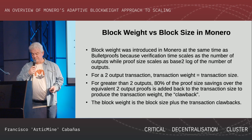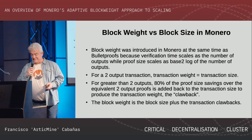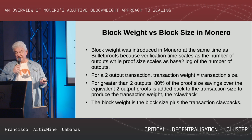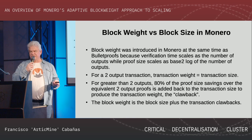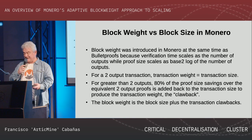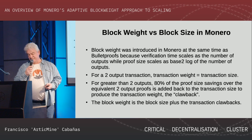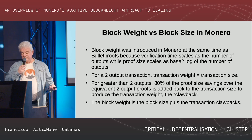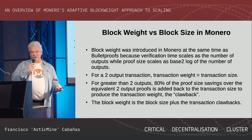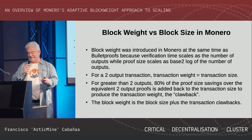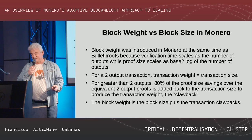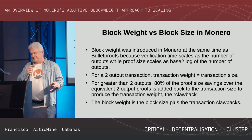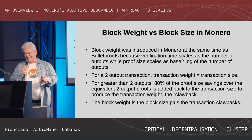Block weight versus block size: in Monero, block weight was introduced at the same time as bulletproofs. The main reason is that verification time scales linearly while proof size scales as log base, so we wanted to price verification time properly to prevent certain attacks. For a two-output transaction, transaction weight equals transaction size. For more than two outputs, we claw back 80% of the savings and gross up the weight. Everything discussed here uses block weights for the penalty functions.